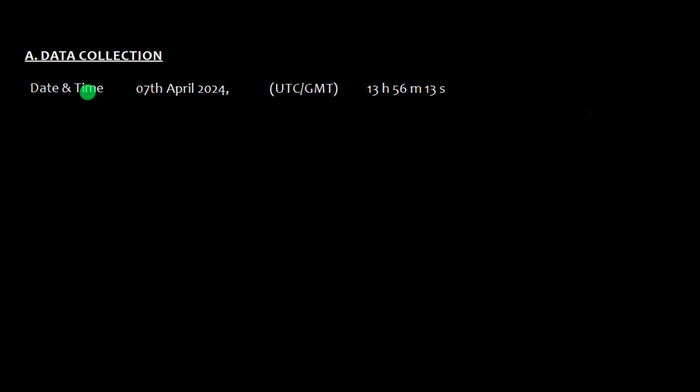You have to note down the date and time. Suppose the date was 7th April 2024. You should note down the format and the time. Date and time should be taken UTC, that is Universal Coordinated Time, or GMT. Technically there is hardly any difference. The UTC is atomic time and GMT is Greenwich Mean Time. So the GMT is 13 hour 56 minute 13 second.